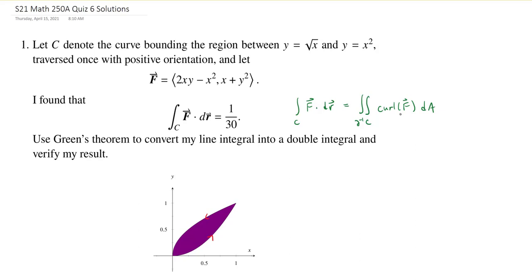First we'll compute the curl. We'll recall, if we label the components by P and Q, the components of F are just functions of two variables, so P and Q. Then the curl is given by taking the partial derivative of Q with respect to X, and you subtract the partial derivative of P with respect to Y. In this case, the partial derivative of Q with respect to X is just going to be 1, and then we'll subtract the partial derivative of P with respect to Y, which is 2X. So I'm going to be able to replace this curl with 1 minus 2X.